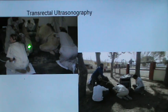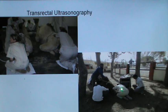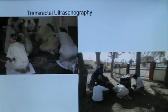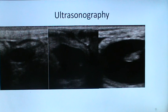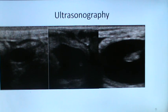Transrectal ultrasonography can be used for pregnancy diagnosis in female camels, done in a sitting position. This is performed at the National Research Center on Camel at Bikaner and at the Camel Reproduction Center in the United Arab Emirates. Ultrasonography allows detection of fluid, the embryo itself, embryonic heartbeat, and subsequently is similar to pregnancy diagnosis in other species.